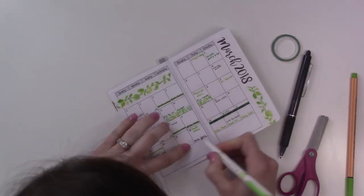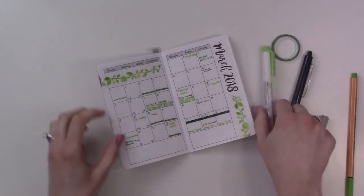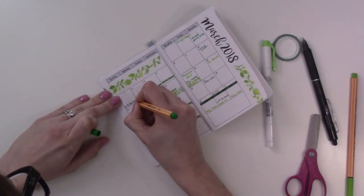And then a couple things here, just the weekly events—I just went ahead and highlighted instead of rewriting them. Then I decided a couple of these things I actually did want in pen, or in green pen instead of erasable pen.